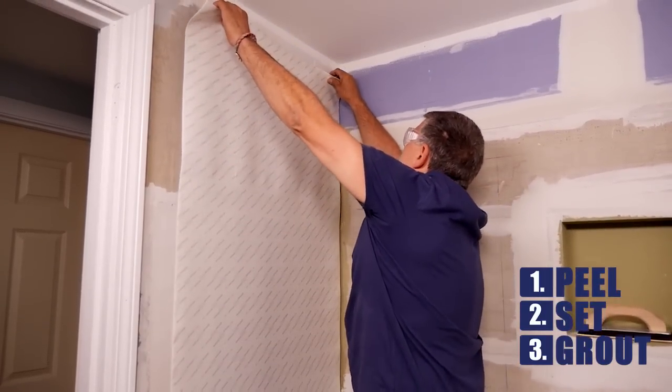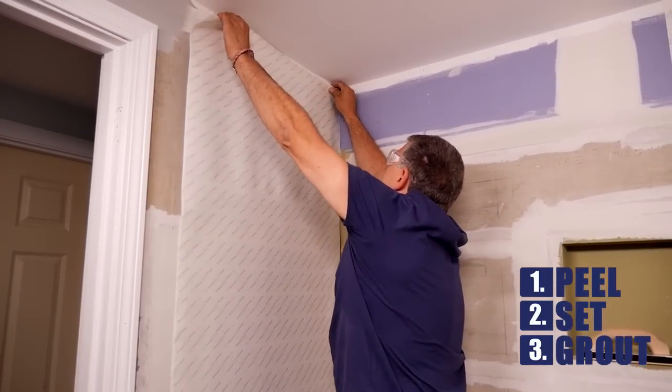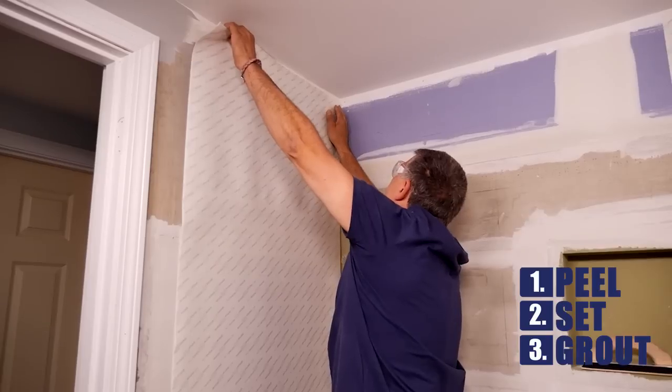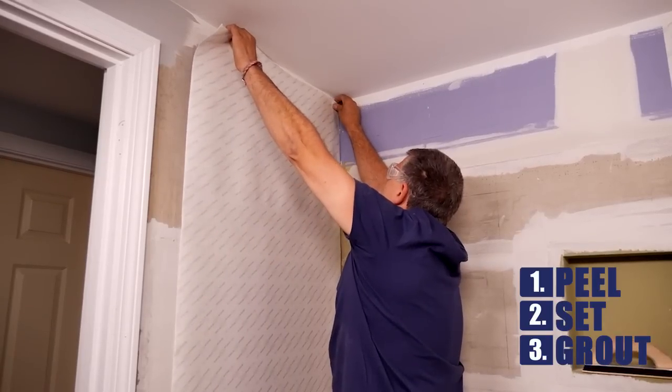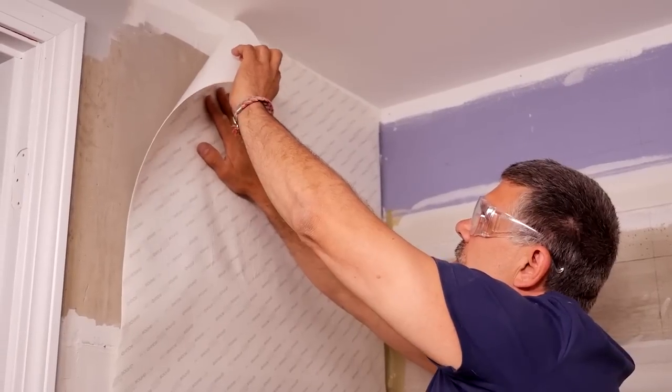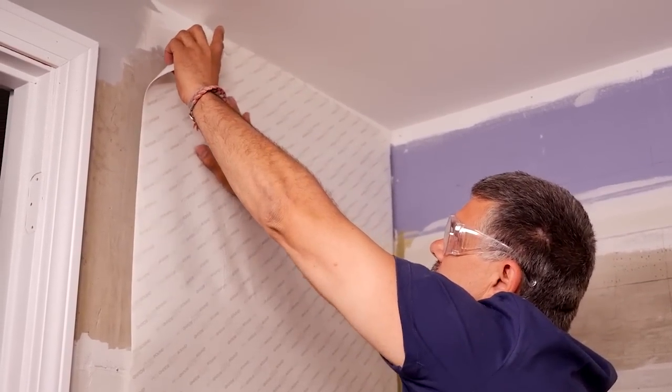Apply light pressure to a top corner of the mat to create a temporary bond and adjust the sheet to achieve plumb. Roll back the mat's other top corner and then re-adhere it to eliminate air bubbles or wrinkles.